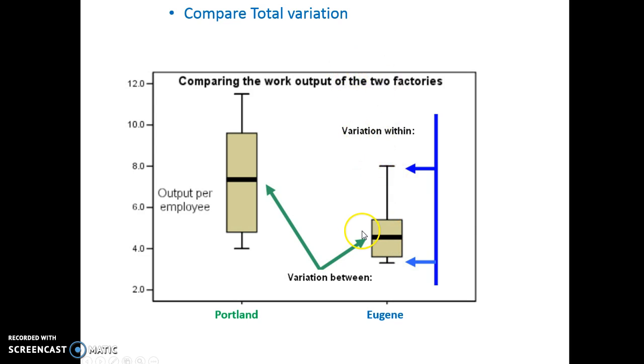However, it's consistent on the low end. So we might prefer Portland, even though we don't have that consistency. We can also compare variation with the middle 50%. So again, we've got here a lot more variation going on. This is a much wider box than this box. But again, as a company owner, I might kind of be like, well, at least these are all higher than these.